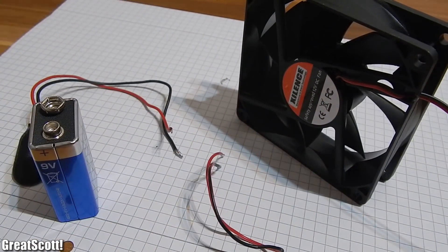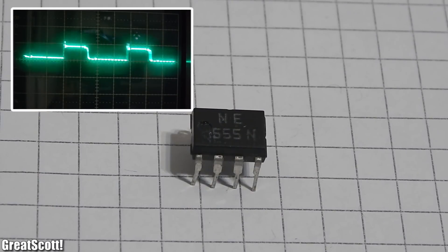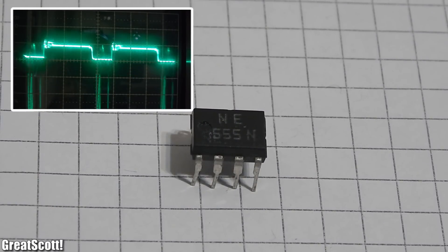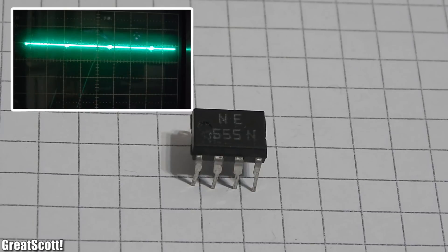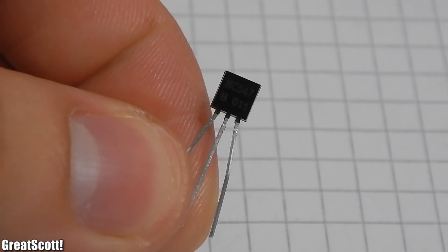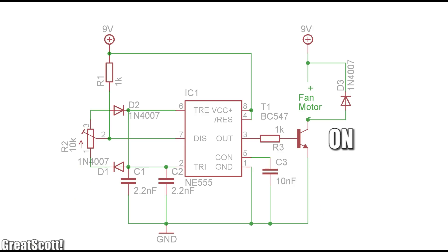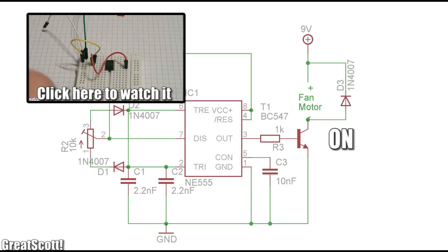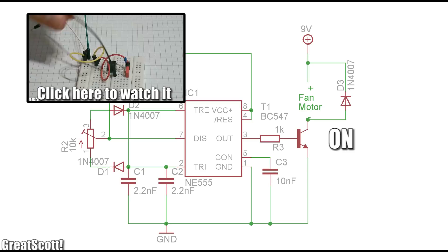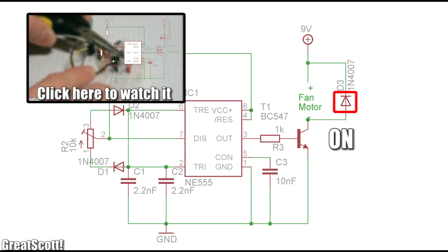For the speed control, I will use a 555 timer to generate an adjustable PWM square wave which controls a basic NPN bipolar transistor, the BC547. The transistor acts as a switch to switch the motor on and off really fast. You may recognize the circuit from my PWM video.